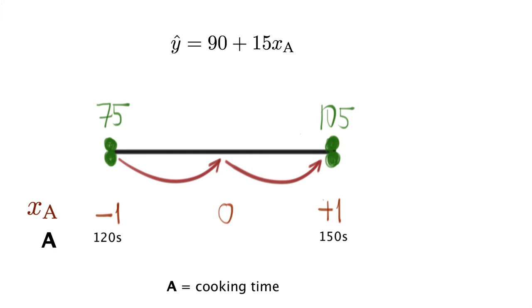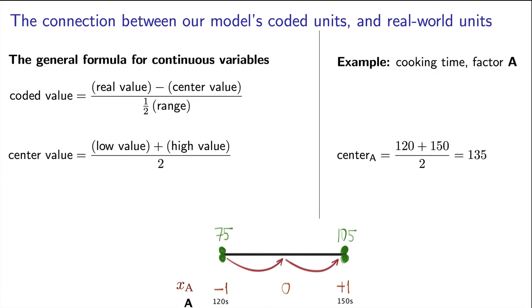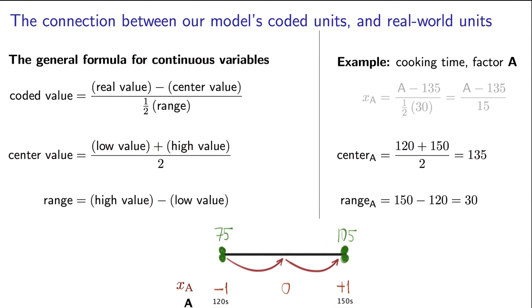This would be a good time to have a discussion about how we connect our coded values in the model to real world values of cooking time. The simple rule for continuous factors is that the coded value equals the real world value minus the center point divided by half the range. In the cooking time factor here, the center point is the middle between the low value and the high value, that corresponds to 135 seconds. The range refers to the high level minus the low level, so 150 minus 120 equals 30, and half the range is then 15 seconds.